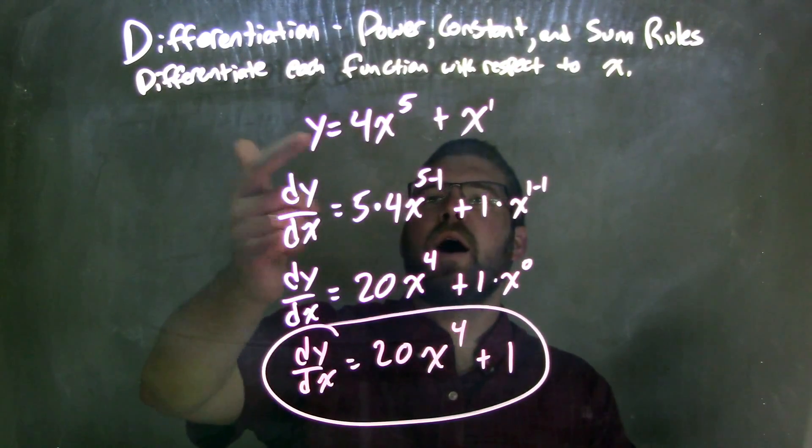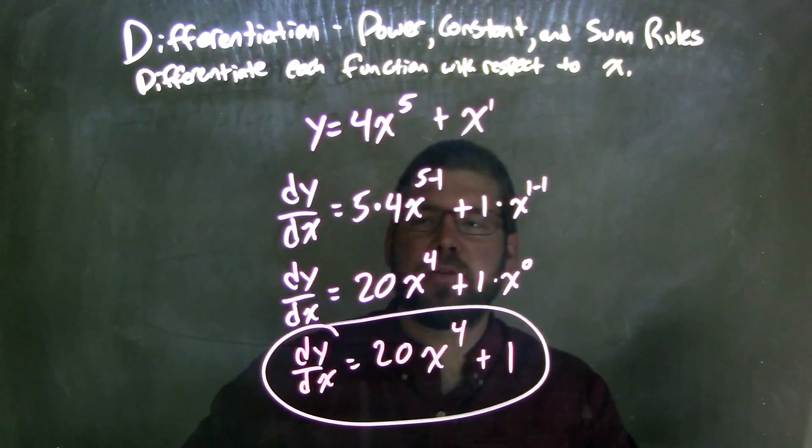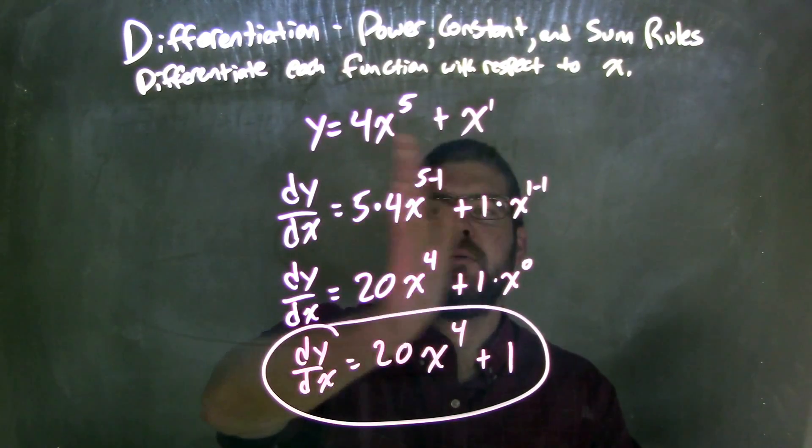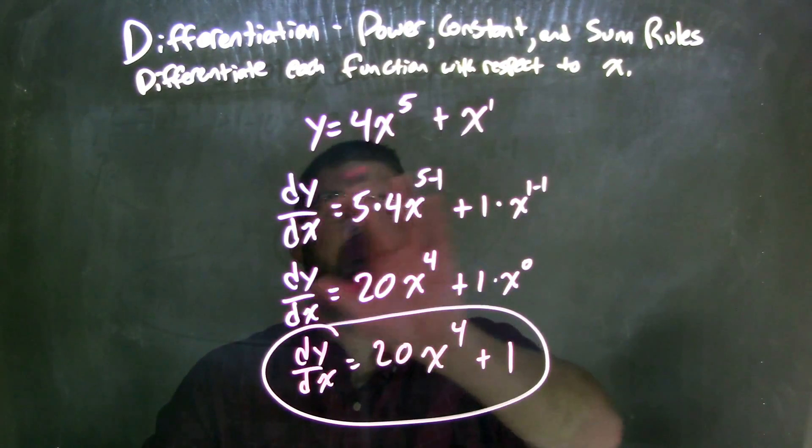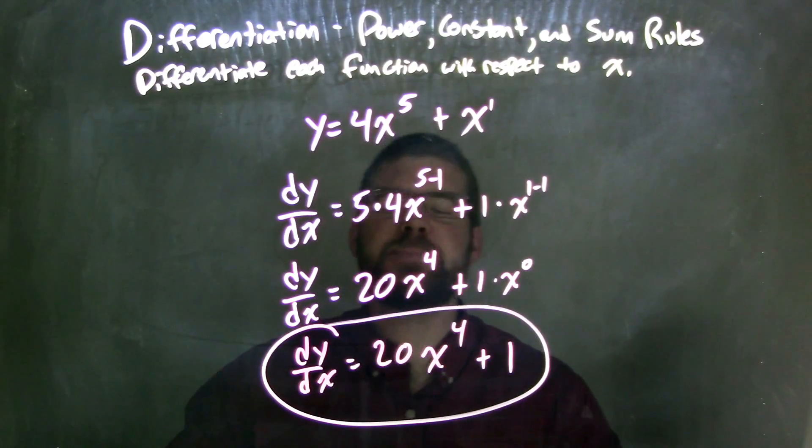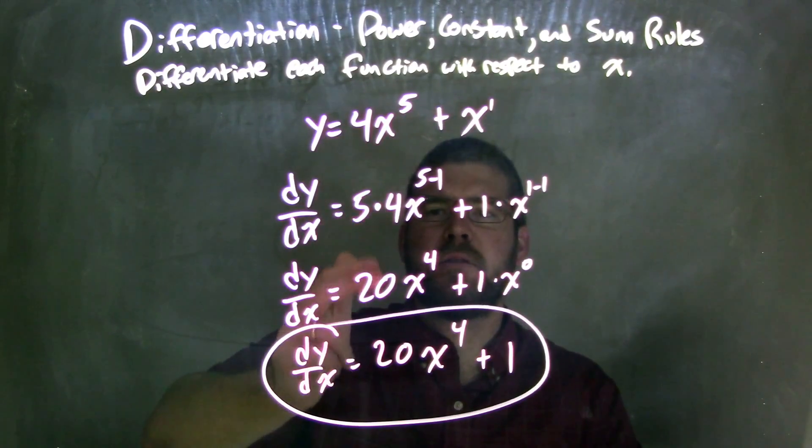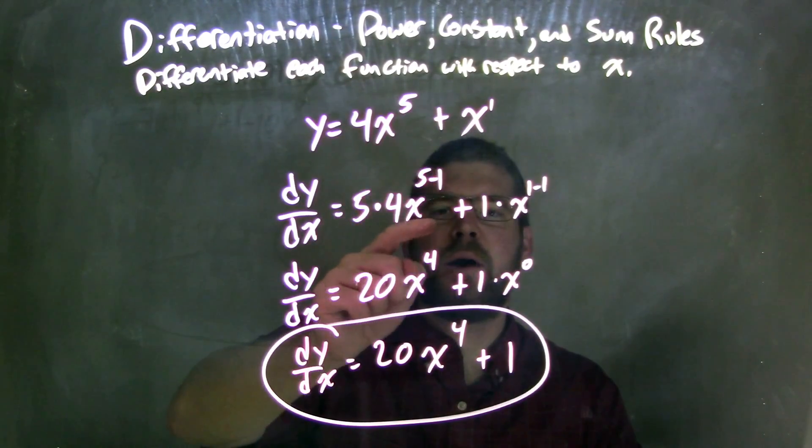So let's recap. We're given y equals 4x to the 5th plus x. I use my power rule and my sum rule separating the two. Sum rule says we can take the derivative of both sums individually. And so we brought that exponent down, 5 times 4, which was 20, and then x to the 5 minus 1 power is x to the 4th power.